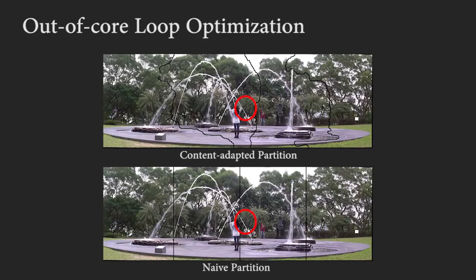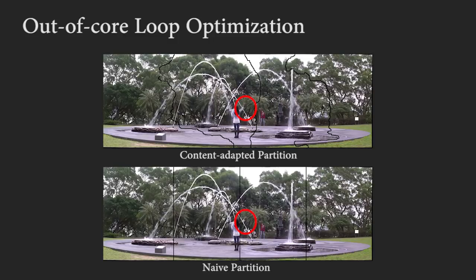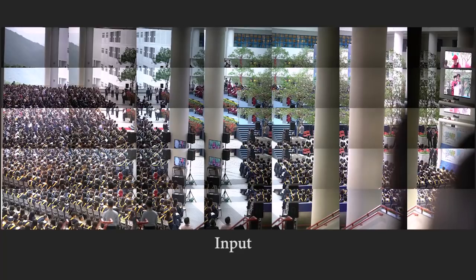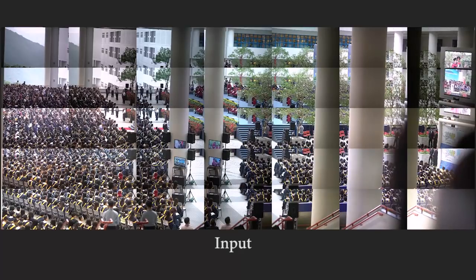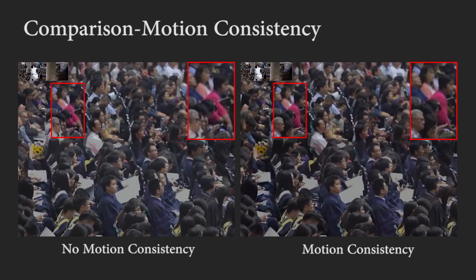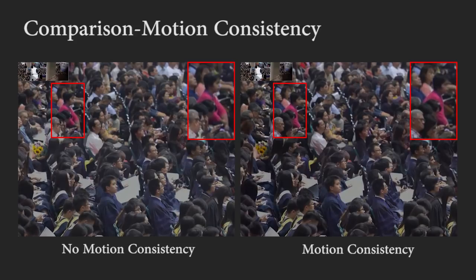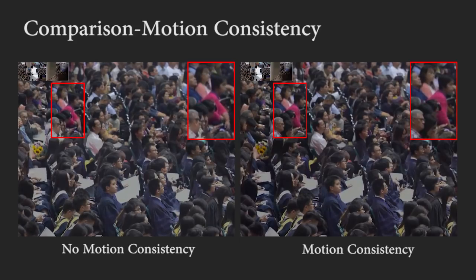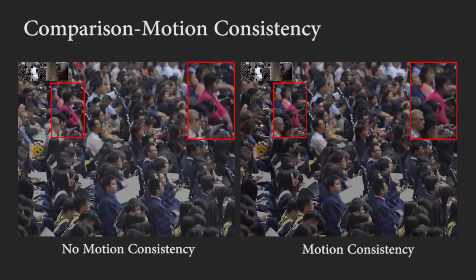Our out-of-core optimization achieves better results when the partition adapts to the content of the input video, so that contiguous dynamic regions lie within the same partition. Here is our commencement panorama result, which consists of 35 video tiles.